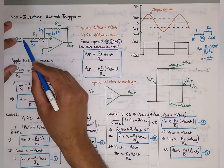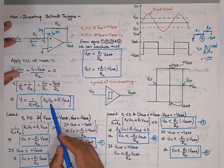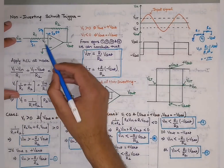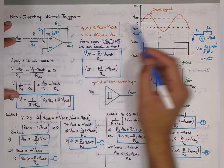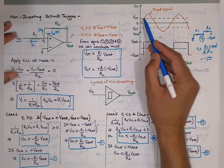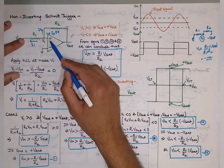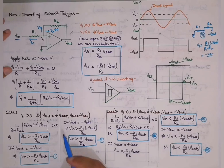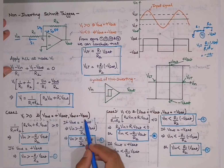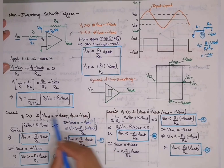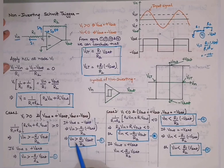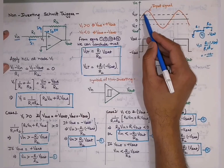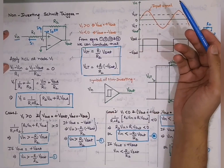As the input voltage increases, Vin adds to V1, causing V1 to rise toward zero and then positive. Once V1 exceeds 0, the non-inverting terminal becomes greater than the inverting terminal, so Vout shifts to +Vsat. This confirms the mathematical result: when the previous Vout is −Vsat, Vin must exceed the upper threshold (R1/R2)·Vsat to trigger the transition.